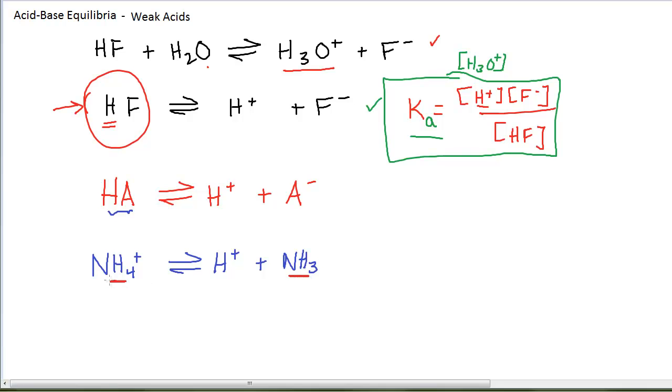This is the conjugate base of this acid. So this is a weak acid, and this is the weak acid's conjugate base. Even though this doesn't quite look like our generic reaction, you can still use the generic reaction as an abbreviation for any weak acid reaction in water.